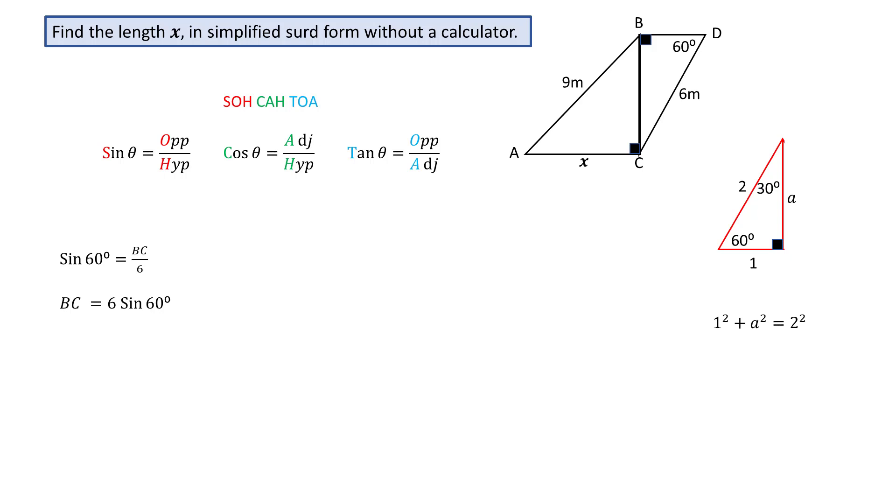Use one of the triangles to calculate the side now labeled a. Use Pythagoras's rule: 1 squared plus a squared equals 2 squared.